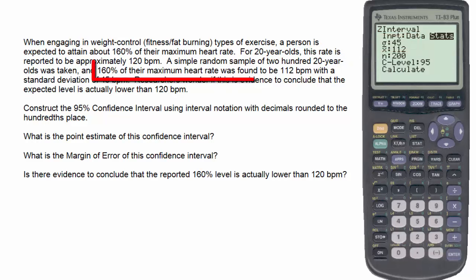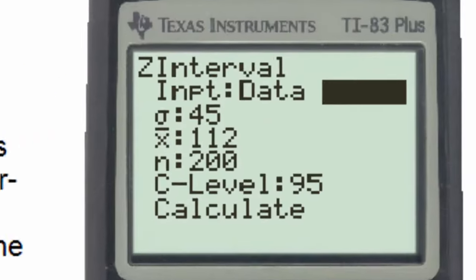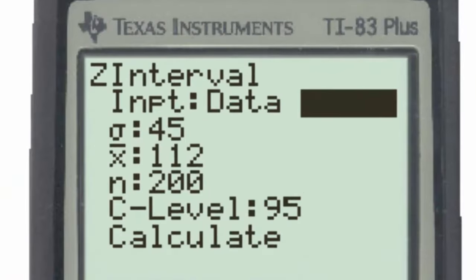For the simple random sample of 220-year-olds, 160% of their maximum heart rate was found to be 112 beats per minute, and the sample size was given to be 200.